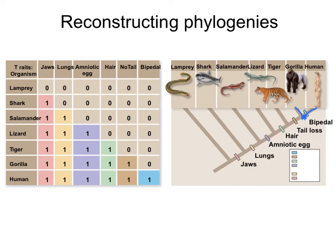The next step is to look at which organism shares the most traits with those two. Tigers share the next maximum number of traits with gorillas and humans, so we place tigers next in the phylogeny. Following that, lizards share the next maximum number of traits, so lizards are placed as the closest relative to that group, and we continue adding salamanders, sharks, and finally lampreys. The higher the number of traits in common, the more closely related the organisms are.